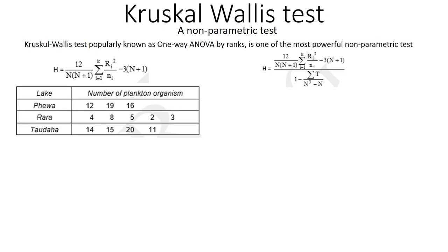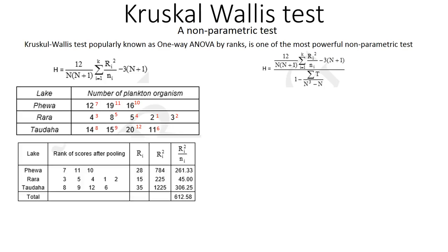A botanist measured the quantity of phytoplankton organisms in three different lakes to determine whether the lakes are similar. The data shows the number of plankton species in each of the three different lakes. Since all the values are different, we can rank each item in the given dataset: the value 2 is the smallest so it gets rank 1, 3 gets rank 2, 4 gets rank 3, 5 gets rank 4, and so on.